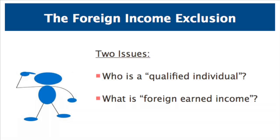To determine whether a particular U.S. taxpayer is eligible for the foreign income exclusion, two issues must be examined in greater detail. First, we will need to determine whether a taxpayer is a qualified individual for purposes of the exclusion. Second, we will need to determine what constitutes foreign earned income that qualifies for the exclusion. We will look at each of these issues in turn.